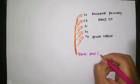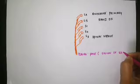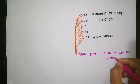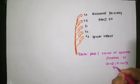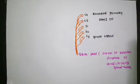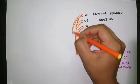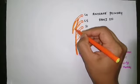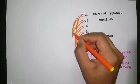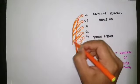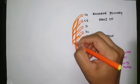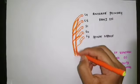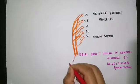So the tibial part is formed by the union of ventral divisions of L4, L5, S1, S2, and S3 spinal nerves. The sciatic nerve has a tibial part as well as a common peroneal part. The common peroneal part is formed by the dorsal divisions of the anterior primary rami of L4, L5, S1, and S2 — note that S3 is not included. All these combine together to form the common peroneal part of the sciatic nerve.